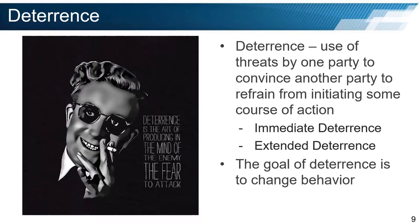Deterrence is defined as the use of threats by one party to convince another party to refrain from initiating some course of action. Thomas Schelling argued in his 1966 classic work on deterrence that the concept of military strategy can no longer be defined as the science of military victory. Instead, he argued that military strategy was now equally, if not more, the art of coercion, of intimidation, and deterrence. Schelling states that the capacity to harm another state can be used as a motivating factor for the other state to avoid such harm and influence their behavior. To be coercive or deter another state, violence must be anticipated and avoidable by accommodation. The use of power to hurt as bargaining power is the foundation of deterrence theory, and is most successful when it is held in reserve.